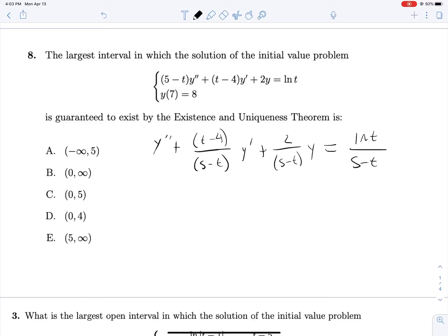Yet again, we'll write out our discontinuities. t equals 5 is no good, and t less than 0 is also no good. We see that our initial condition is for t equals 7. So we'll put 7 in the middle of our number line and see what happens here.